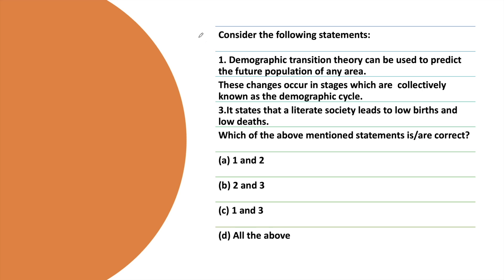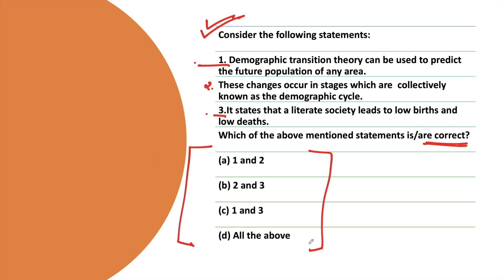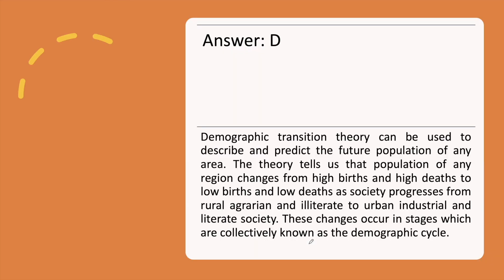Moving on to the last question for this chapter: Consider the following statements. Statement 1: Demographic transition theory can be used to predict the future population of any area. Statement 2: These changes occur in stages collectively known as the demographic cycle. Statement 3: It states that a literate society leads to low births and low deaths. Which of the above statements are correct? The correct answer is option D, with the explanation.